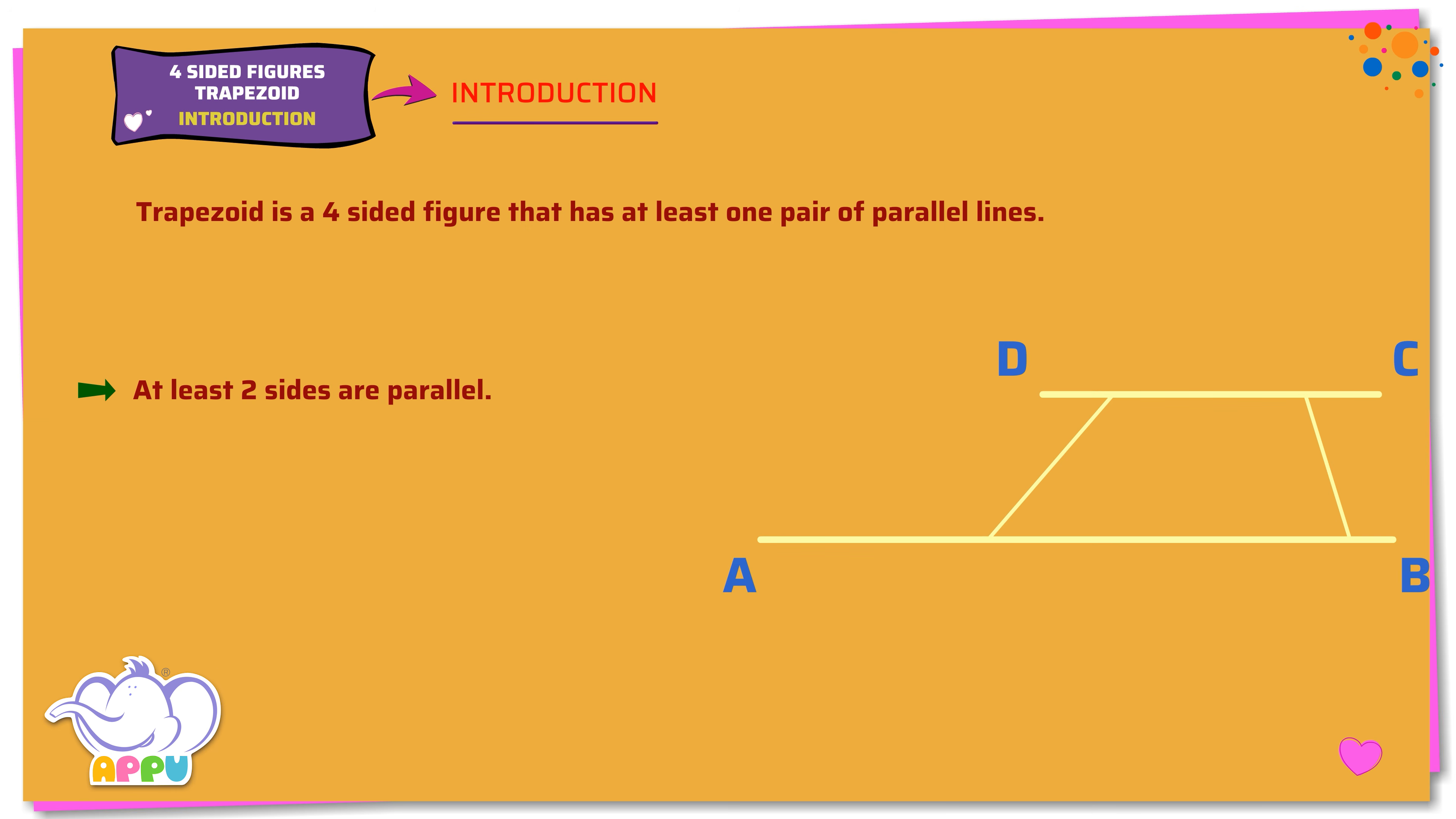Here AB is parallel to CD. AD is not parallel to BC because they intersect.